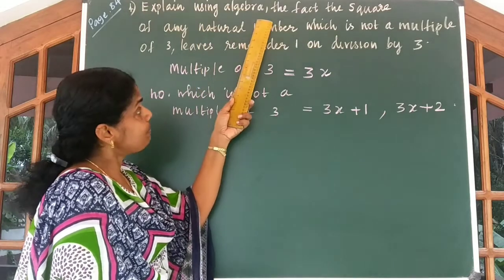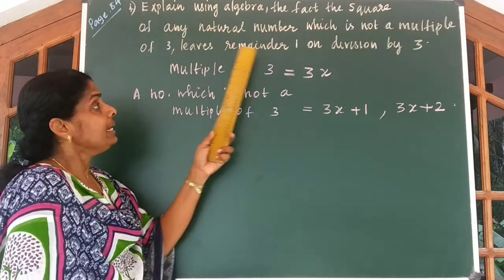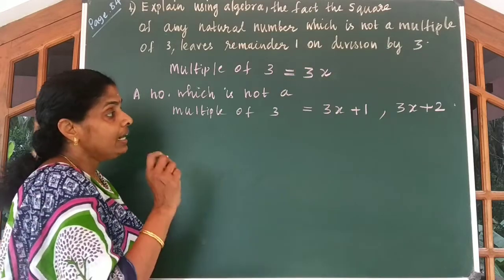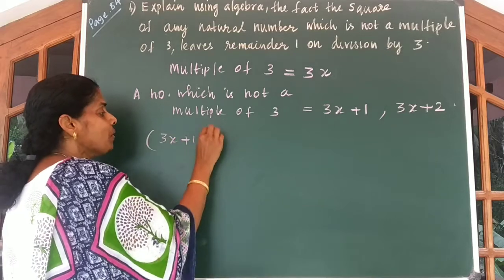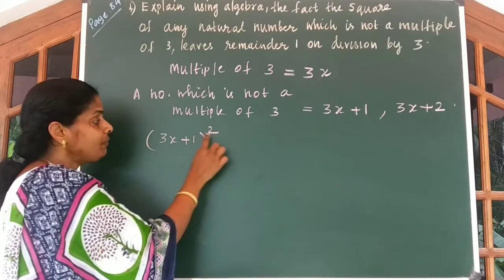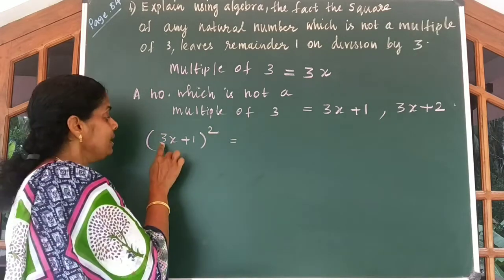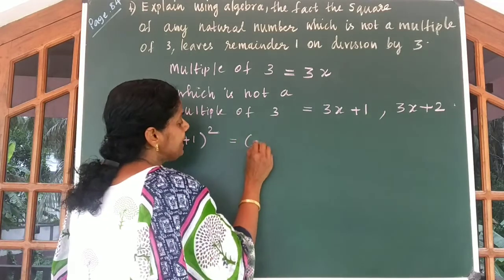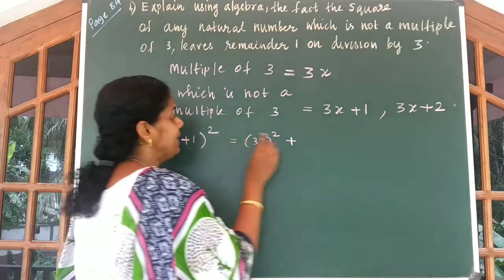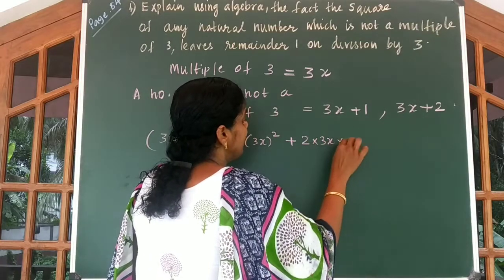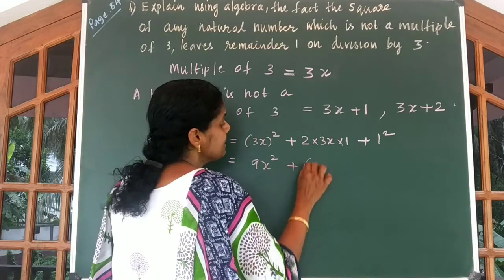Now come to the question: explain using algebra the fact that the square of any natural number which is not a multiple of 3 leaves remainder 1 on division by 3. So we get (3x plus 1) the whole square — the square of a number which is not a multiple of 3. Expanding using (a plus b) whole square: (3x) whole square plus 2 into 3x into 1 plus 1 square, which equals 9x square plus 6x plus 1.